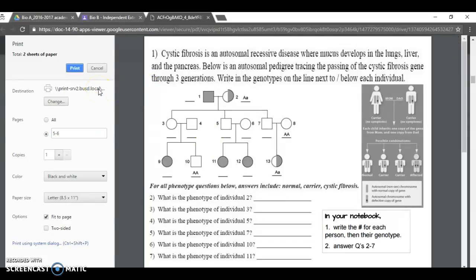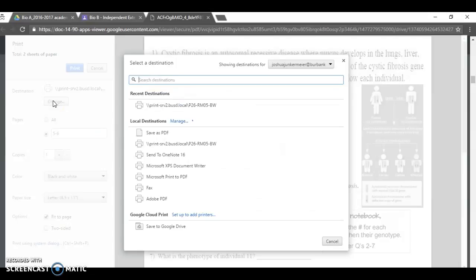So five through six. Now we'll only print those two slides, which are now kind of printed worksheets you're going to fill out. Then you need to make sure you have the right printer. Click change right here and you're going to choose room five.